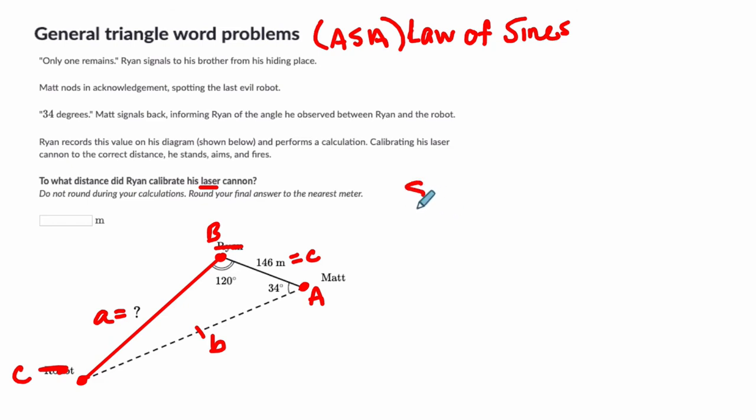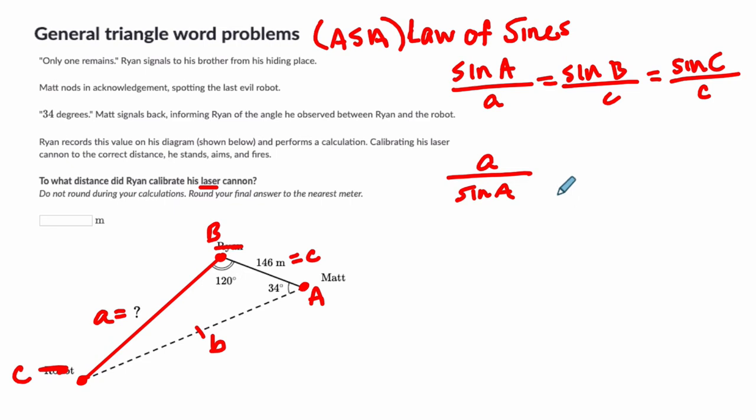And then I'm going to call where the robot is C, which makes this 146 side length C. So my law of sines says the sine of angle A over the side length—I'm going to put, remember the law of sines, sine of A over a equals the sine of B over b. The big capital letters are angles. The lowercase on the bottom are side lengths. Equals the sine of C over c. It's also true that a over the sine of A equals b over the sine of B equals c over the sine of C.